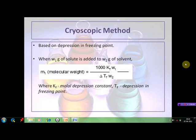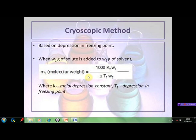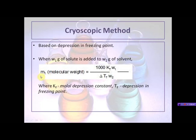The first method for determining molecular weight experimentally is the cryoscopic method, which is based on the depression in freezing point. If w₁ grams of the organic compound (the solute) is added to w₂ grams of a suitable solvent, and ΔTf is the depression in freezing point observed, then the molecular weight M₁ is equal to 1000 × Kf × w₁ divided by ΔTf × w₂, where Kf is the molar depression constant. This formula gives us the molecular weight of the organic compound.